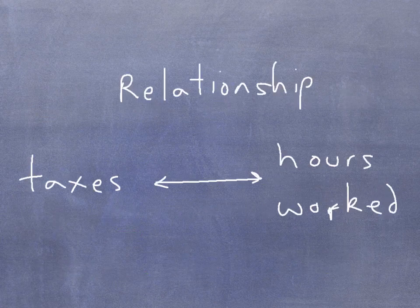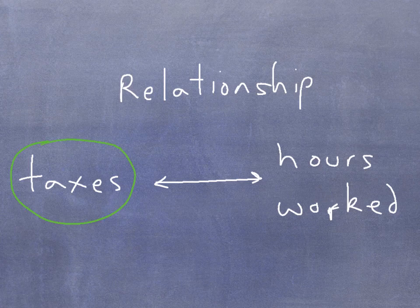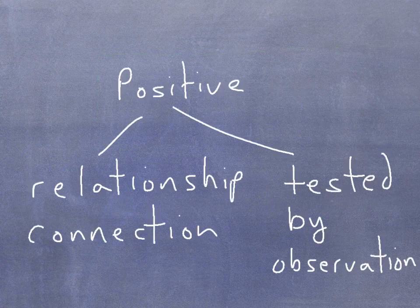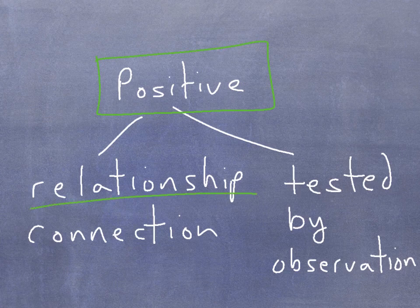Basically, what it's saying is that if income taxes are increased, the number of hours that people will work will be decreased. Now, a statement like this that looks at the relationship between two variables is a positive statement. So positive statements are statements that look at the relationship or connection between two things. In this case, taxes and hours worked.